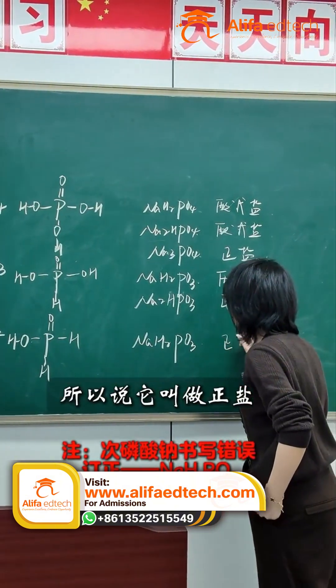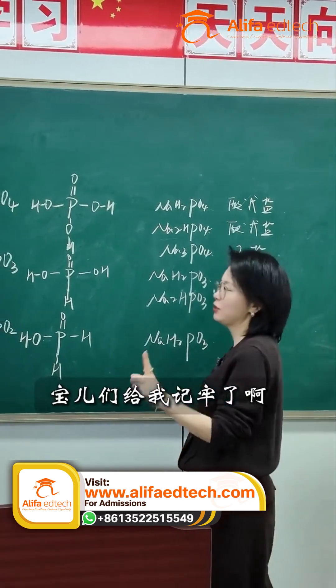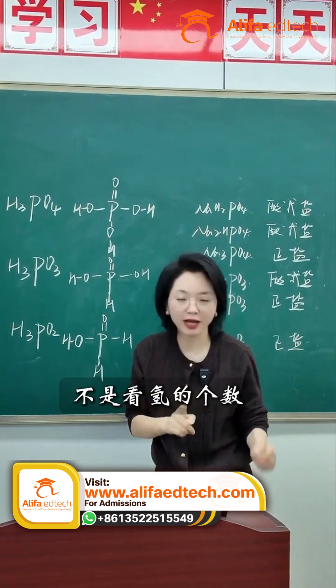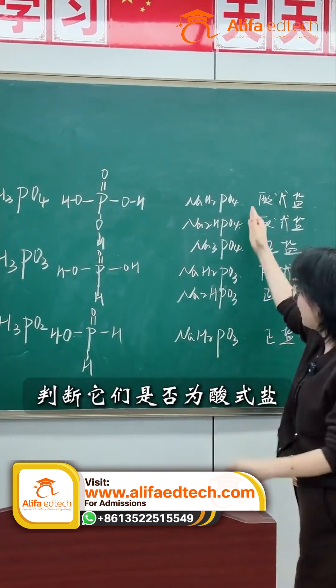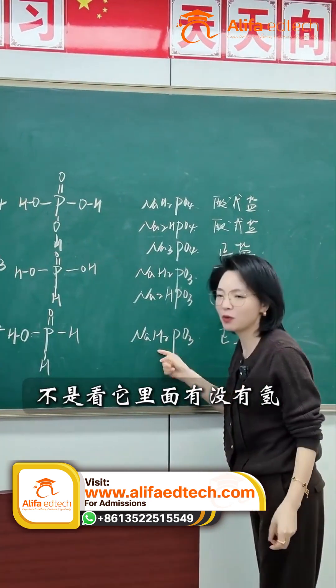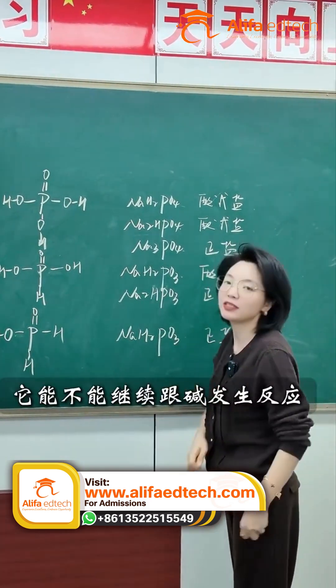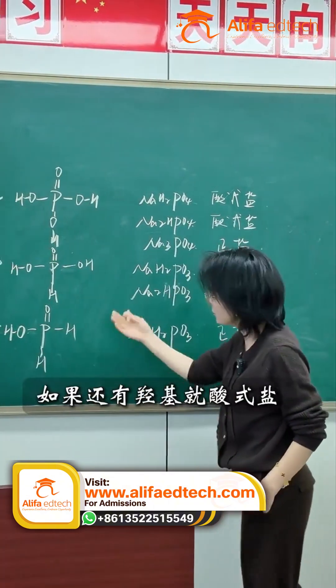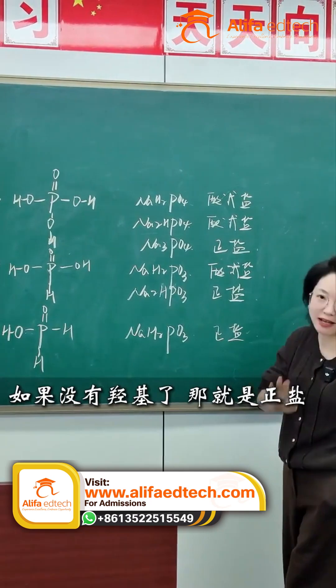Remember this, my friends. To determine if it's a polyacid, you don't look at the number of hydrogen atoms, but rather the number of hydroxyl groups. To determine if it's an acid or a salt, you don't look at whether it has hydrogen atoms, but whether it can continue to react with the test results. Does it contain hydroxyl groups? If it does, then it's an acid, and if it doesn't, then it's a salt.